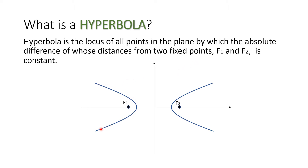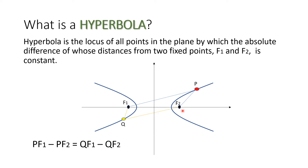Let us consider these two curves of our hyperbola. We have two fixed points, F1 and F2, and they are actually the foci of our hyperbola. Let us consider a point and call it point P, and connect this point P with the two foci. Now let's have another point Q, and just like what we did with point P, we connect point Q to the two foci. This is how we say this is a hyperbola: the difference in the length of PF1 and PF2 is the same as the difference of the distances QF1 and QF2. That is how we define a hyperbola.